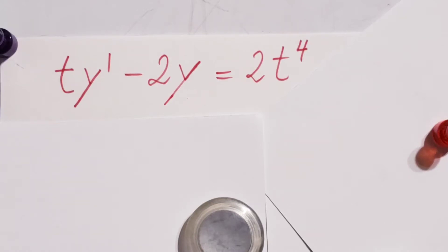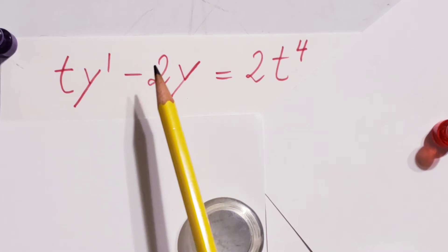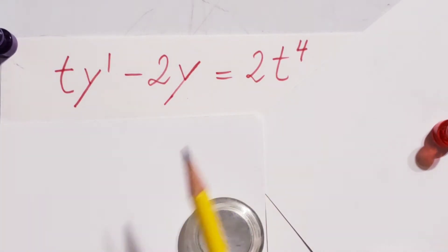All right, let's solve this differential equation: t y prime minus 2y equals 2t to the power of 4.